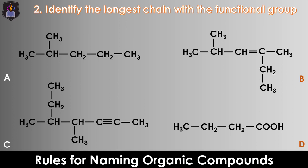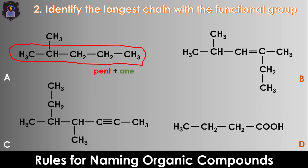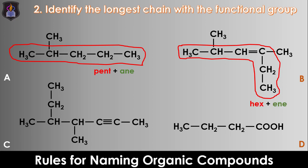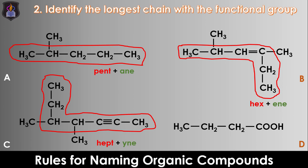Rule 2: Identify the parent chain by looking for the longest continuous carbon-to-carbon chain bearing the functional group in any direction — horizontally, vertically, or diagonally, though horizontal is always most preferable. The number of carbon atoms in that chain will form the root. The longest chain in compound A contains five carbon atoms, so its root will be pent. In B, the longest chain bearing the functional group contains six carbon atoms, giving it the root hex. In compound C, the longest chain bearing the functional group contains seven carbon atoms, giving it the root hept. In D, the longest chain with the carboxylic group contains four carbon atoms, so the root is but.